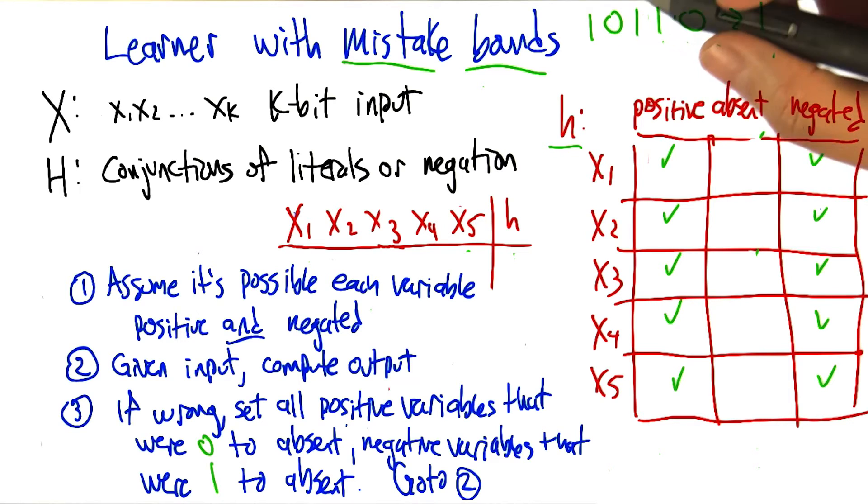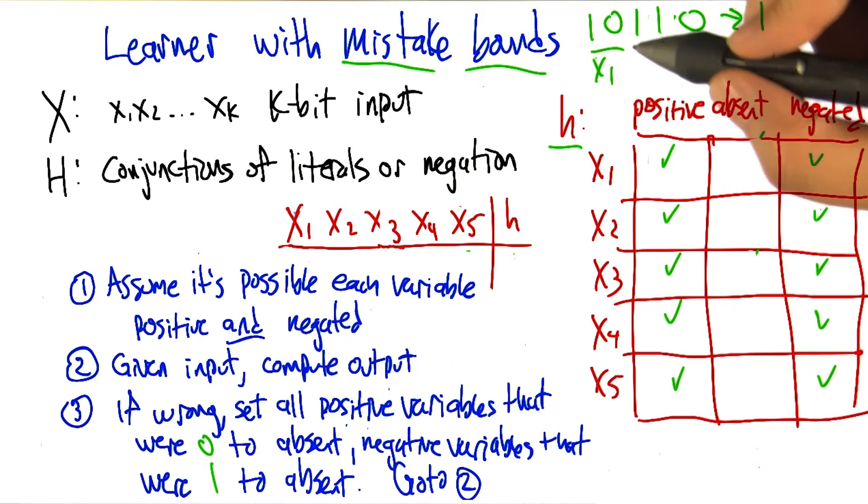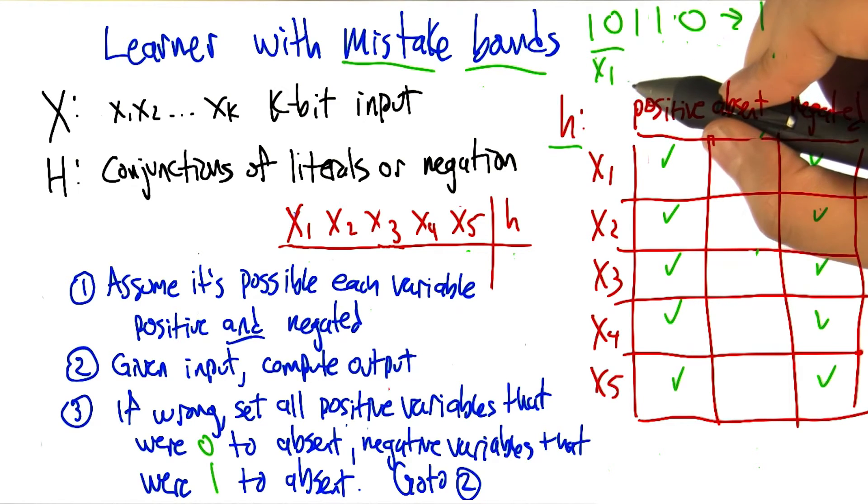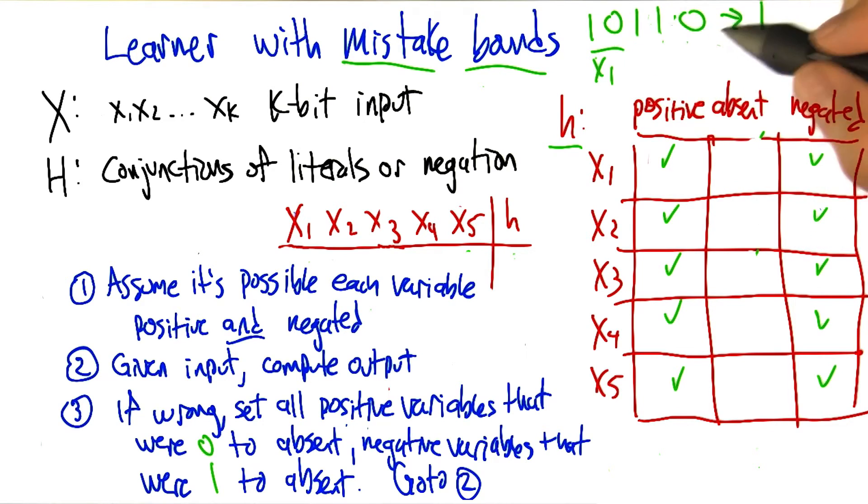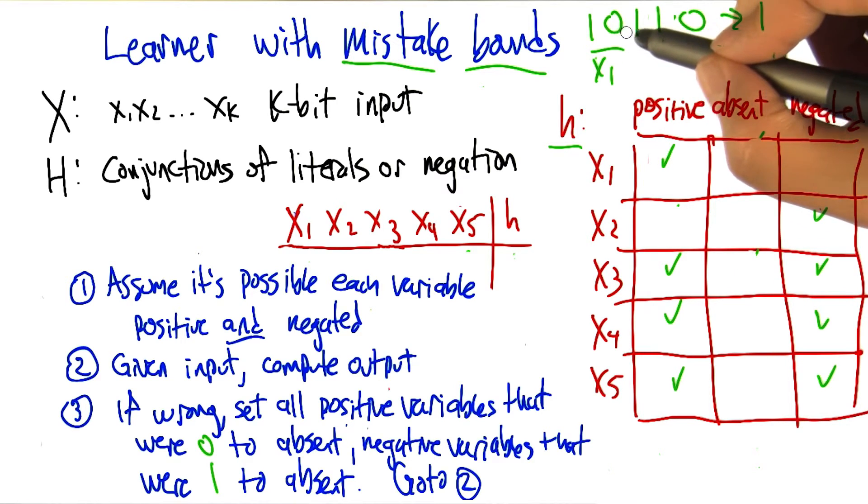So the first variable, the X1 naught cannot be in the formula. Because if it was, there's no way that this would have been able to produce true. Right. So we can erase X1 naught. We can erase X2 in a positive form, because of the second bit.